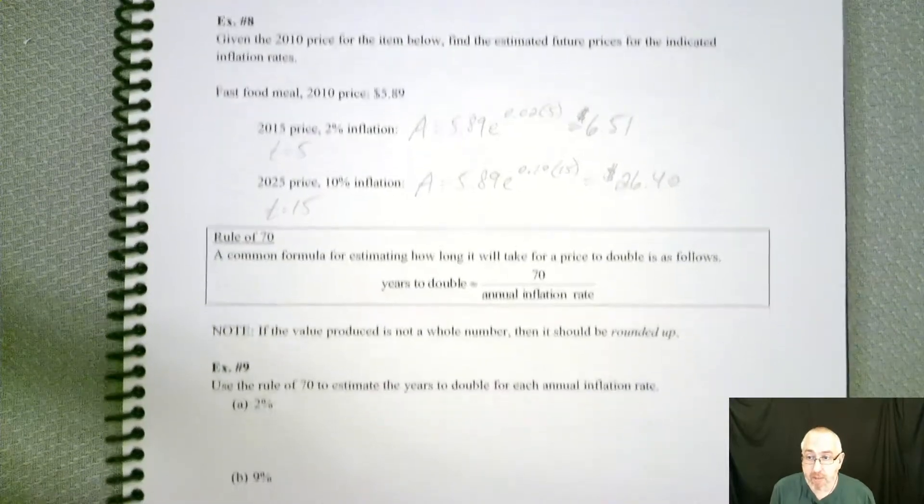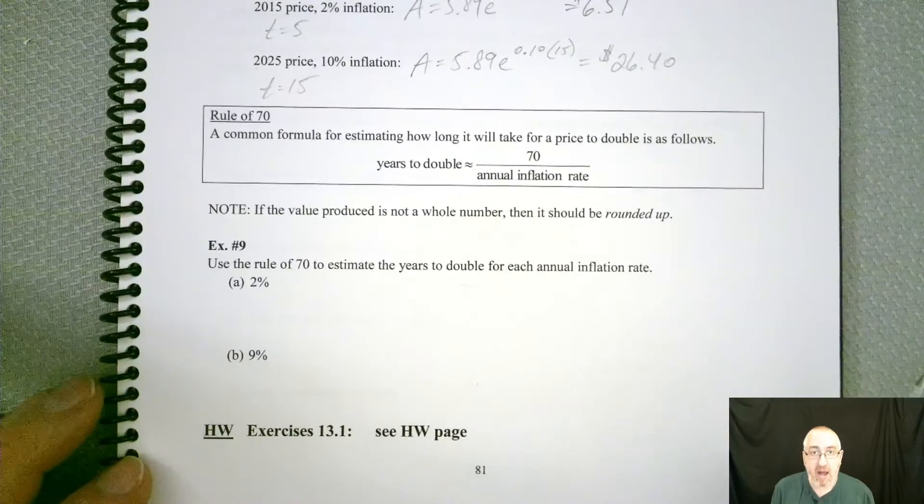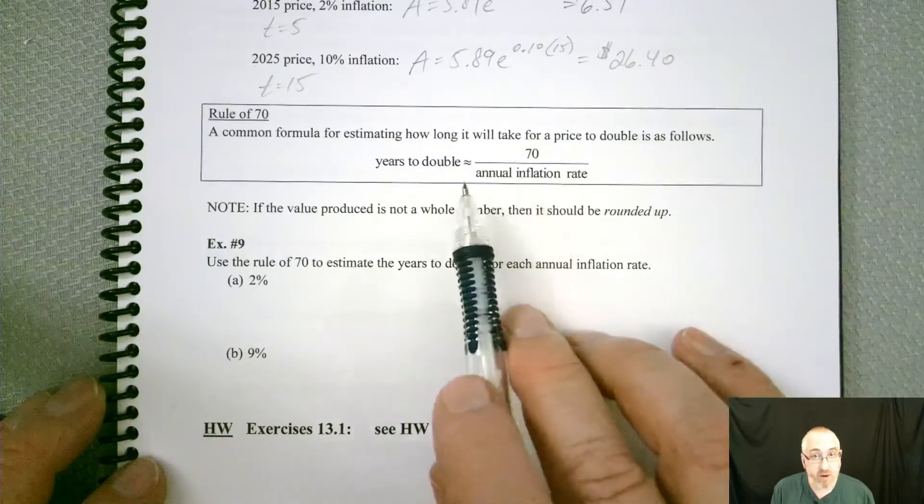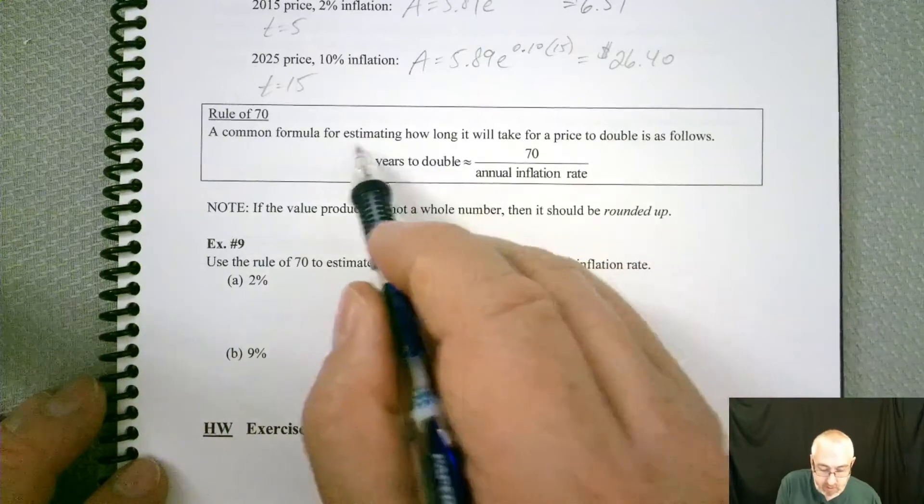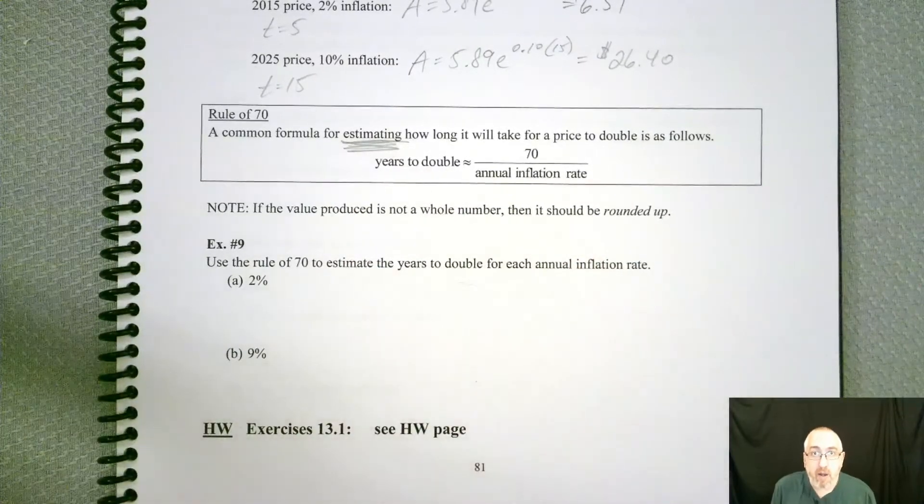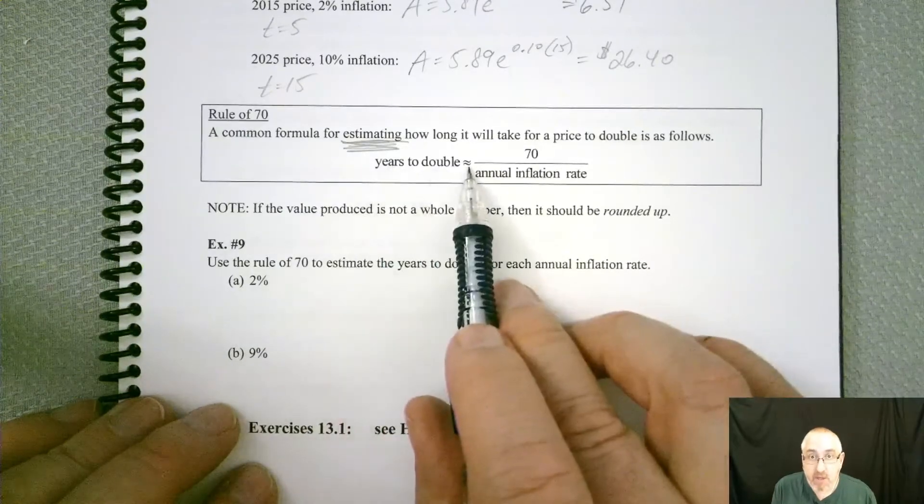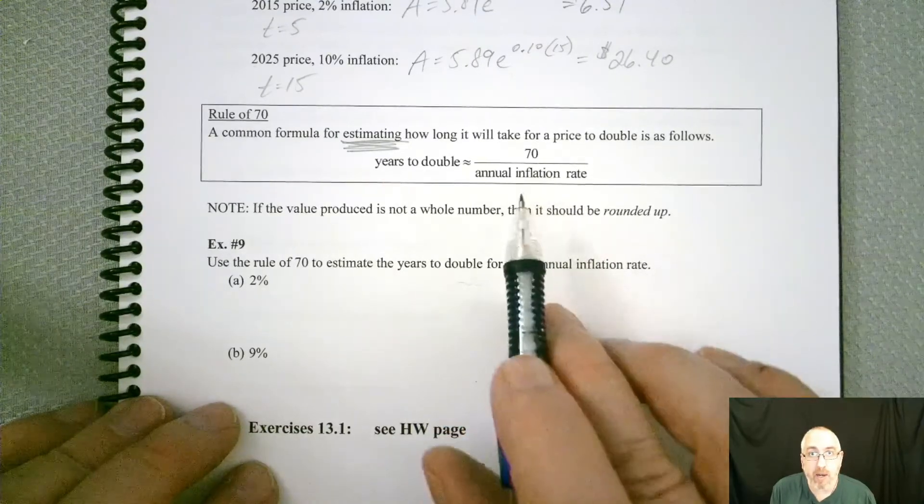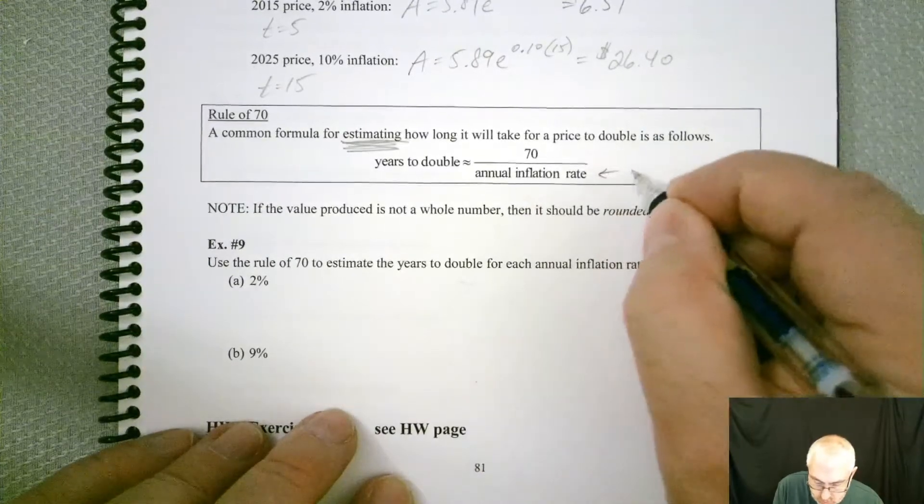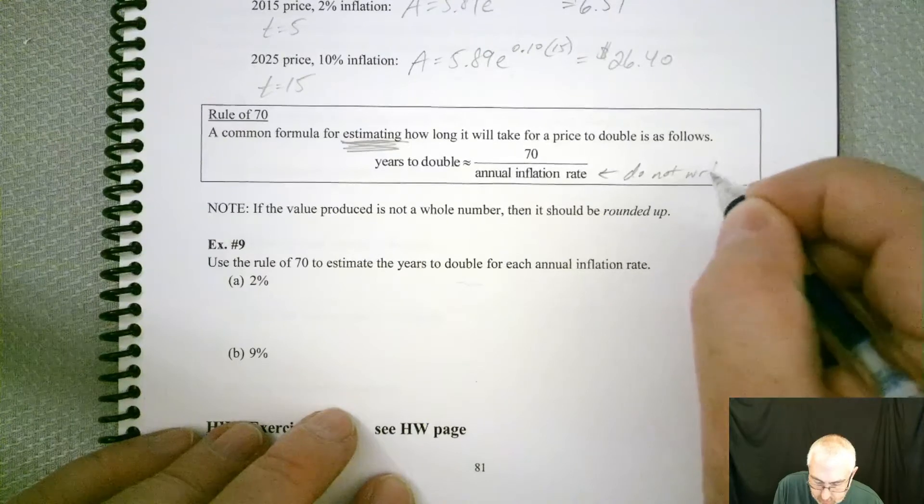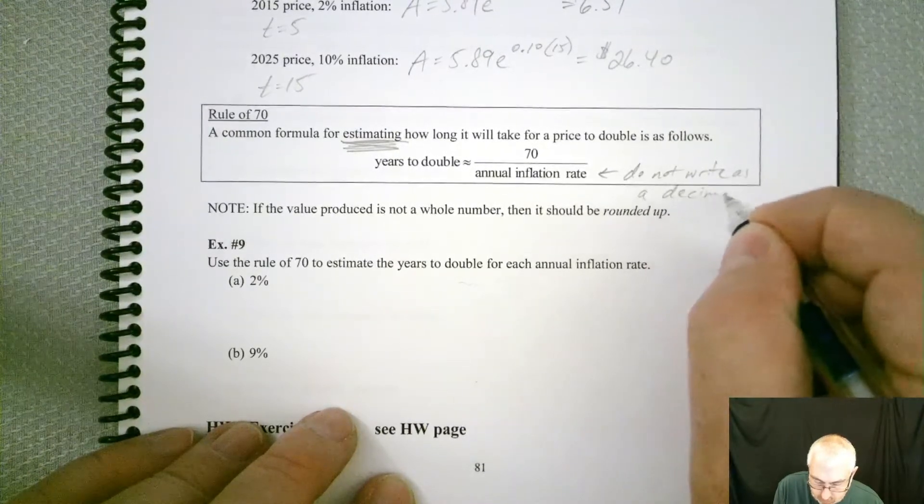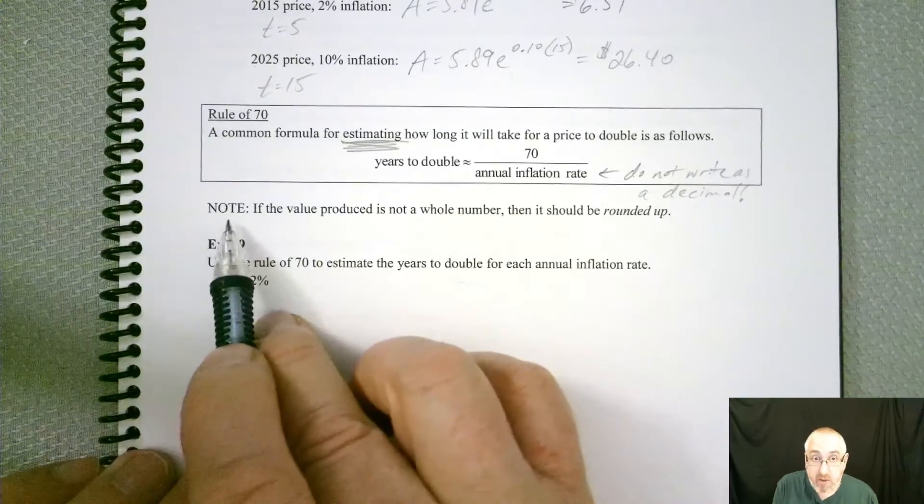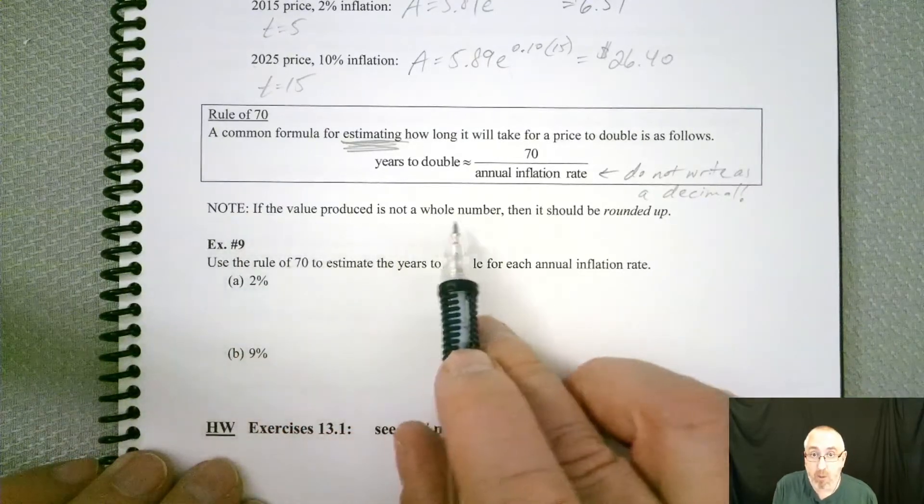Okay. The last application to wrap up this section is looking at the Rule of 70. And the only issue is when we're talking about the inflation rate in here. So it's a very quick formula. All we're doing is getting an estimate. So we're not finding anything hard. We're just finding an estimate. Years to double is approximately equal to 70 divided by the annual inflation rate. The only issue is that this inflation rate, you do not write as a decimal.